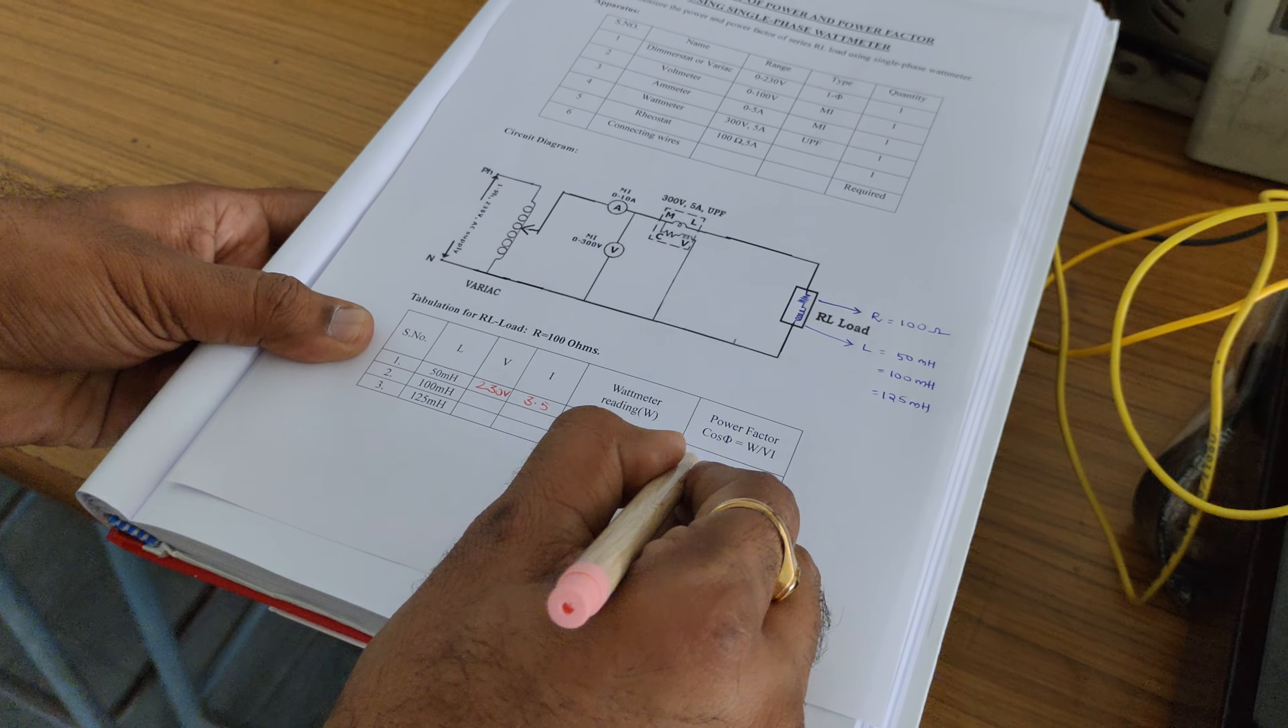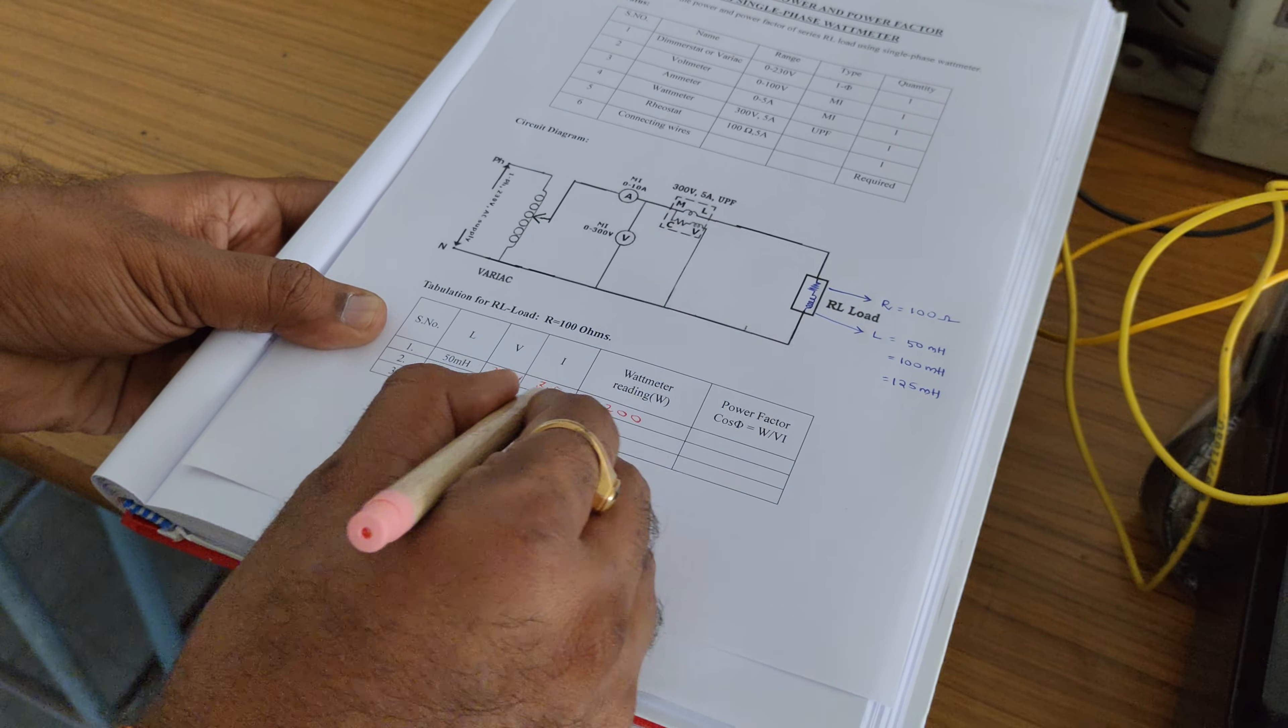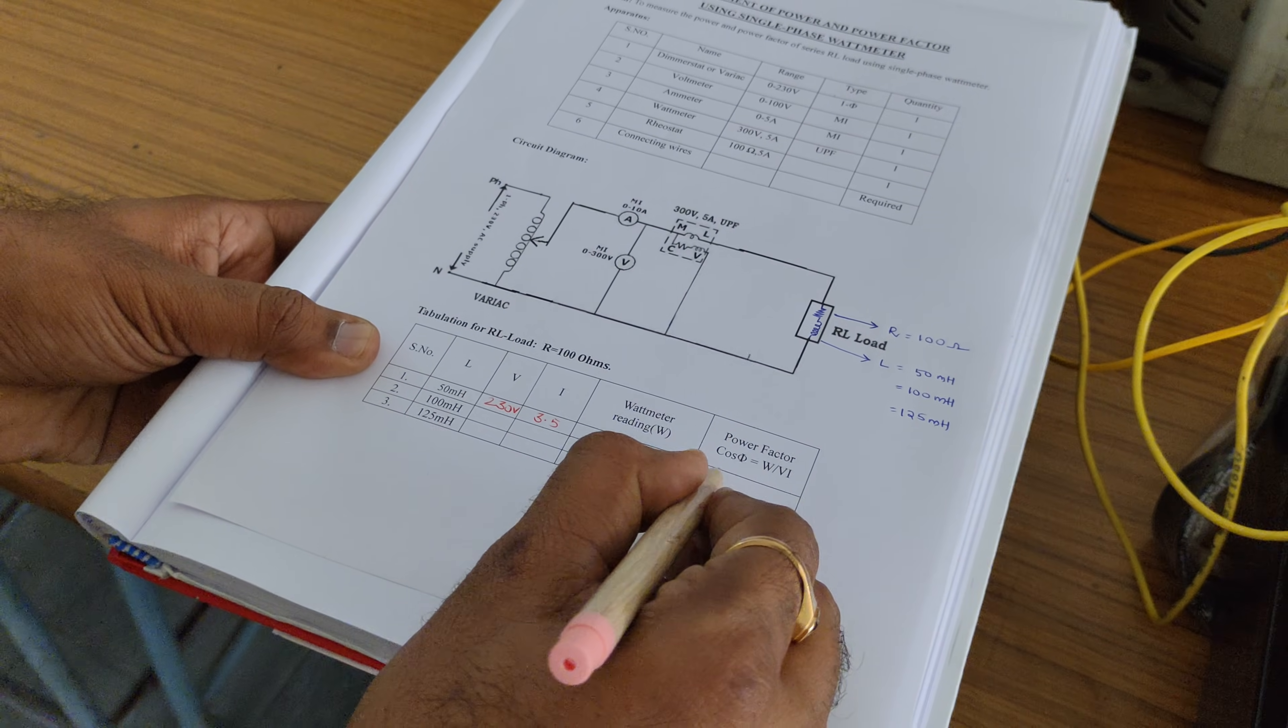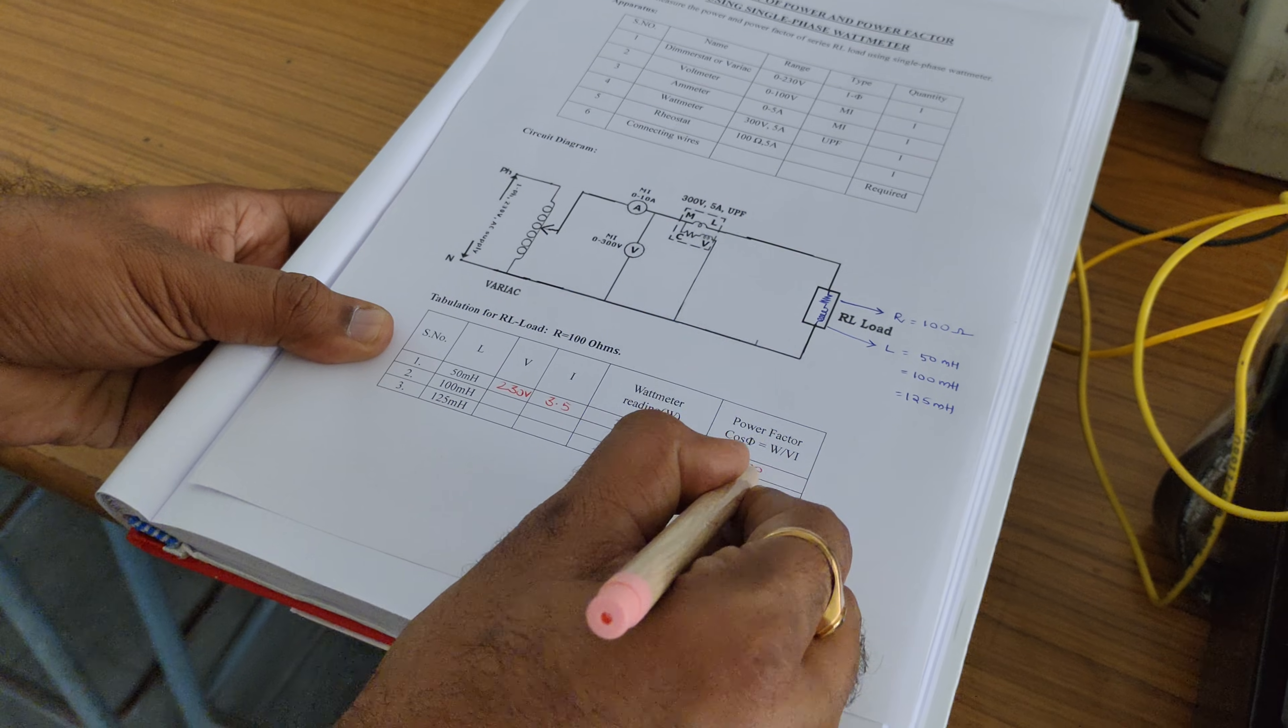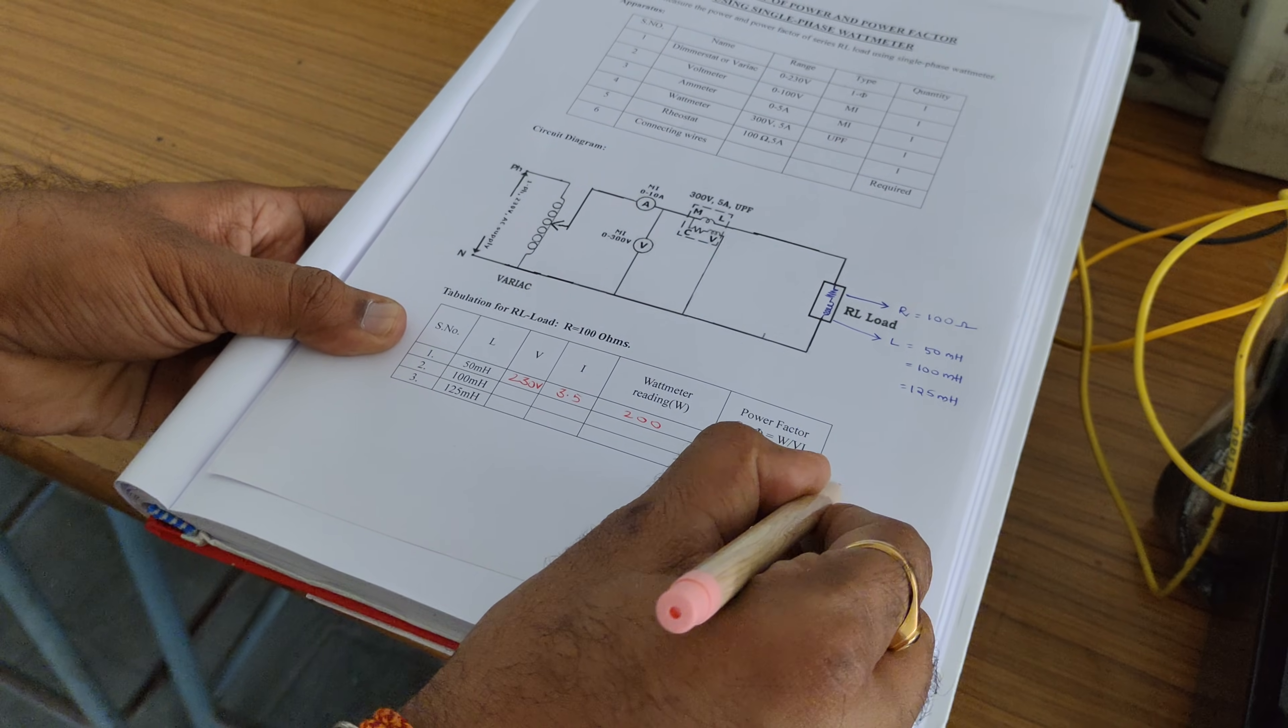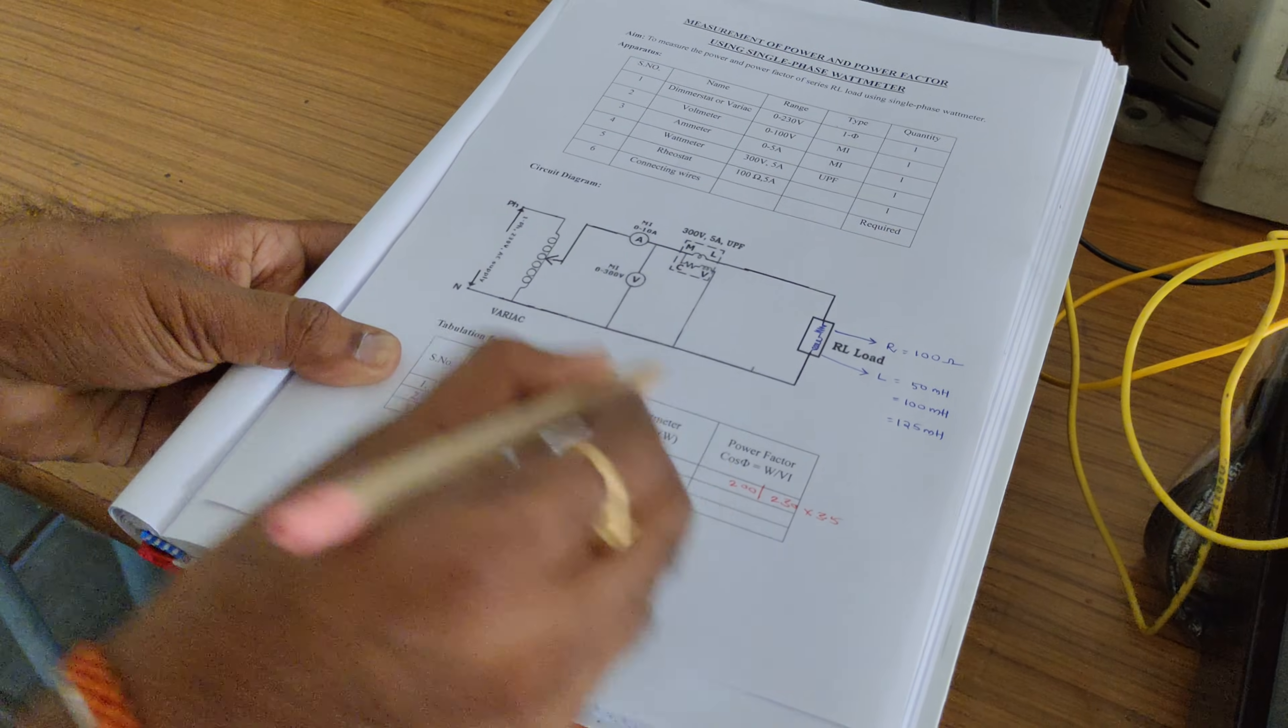And make sure that power factor is nothing but the wattmeter reading divided by product of these two things. It is 200 divided by 230 into 3.5 which gives the power factor cos phi.